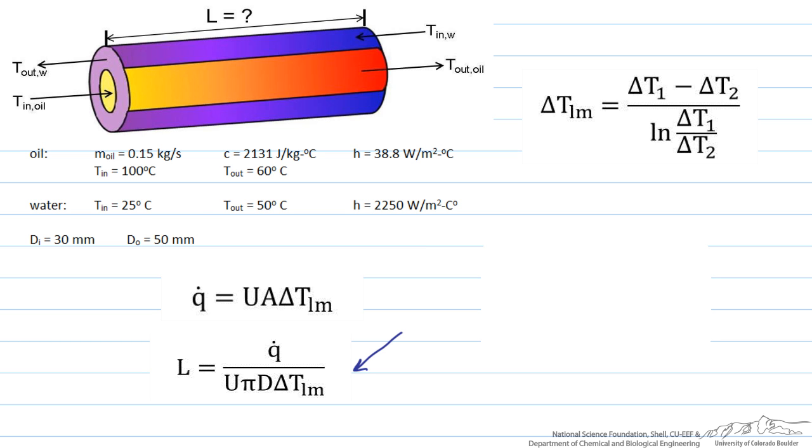What's different in this particular heat exchanger is because the fluids are going in the opposite direction, our delta T1 and our delta T2 are going to be different for a counter-flow versus a parallel flow. So let's take a look and see what our delta T1 is going to be.